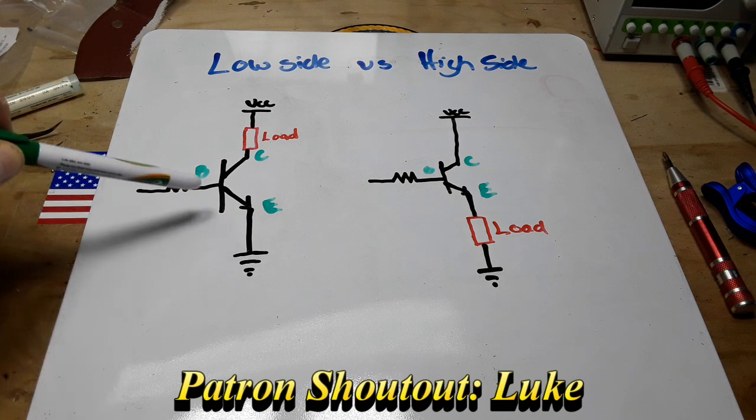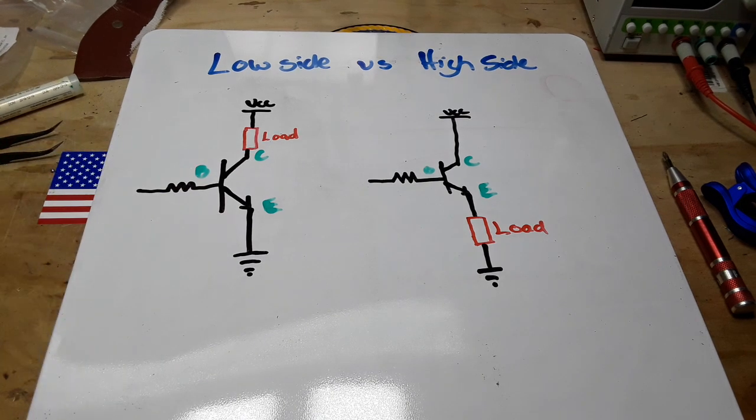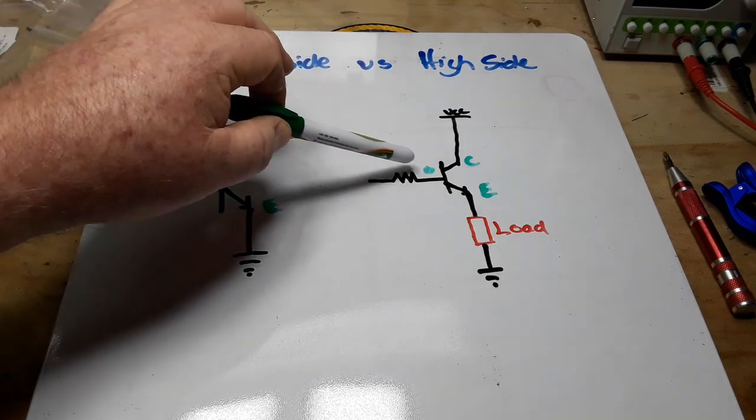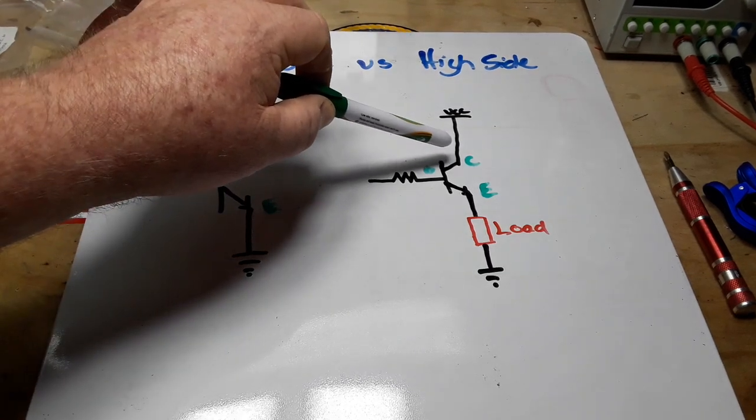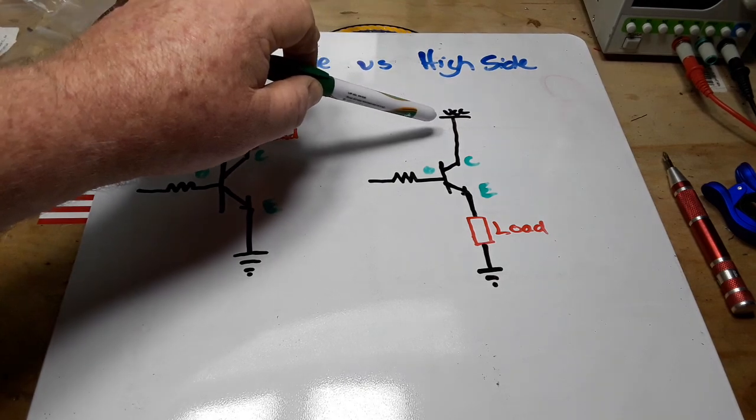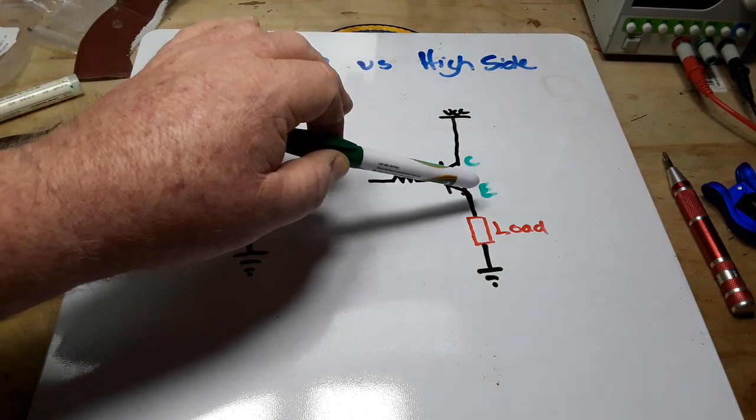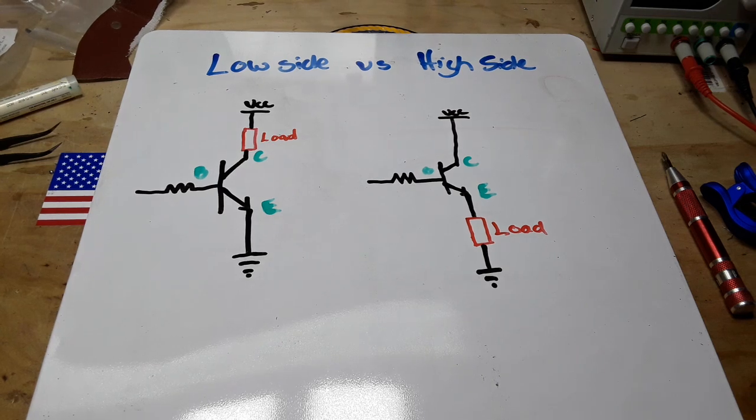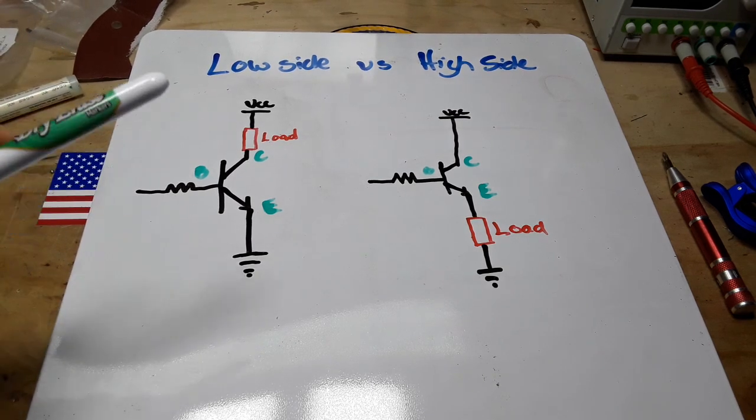Over here is our high side switching. There's our base, our collector is always getting VCC and our emitter is switching the load on and off.